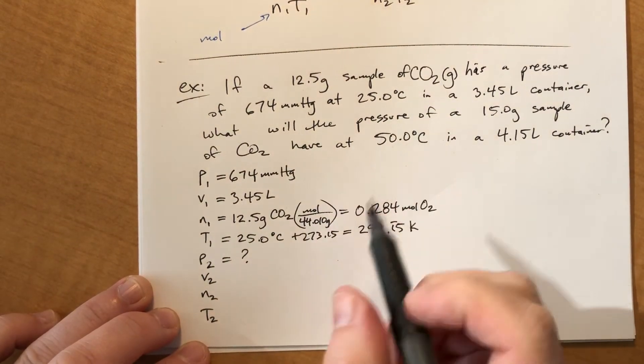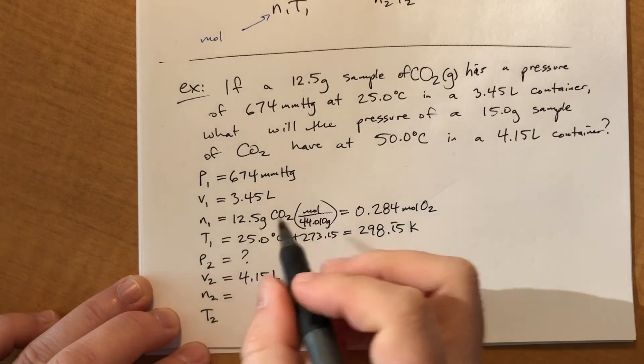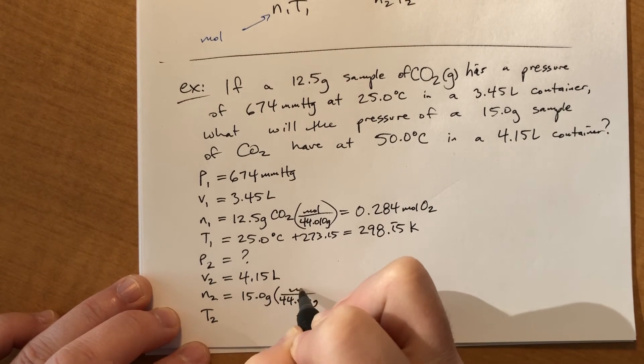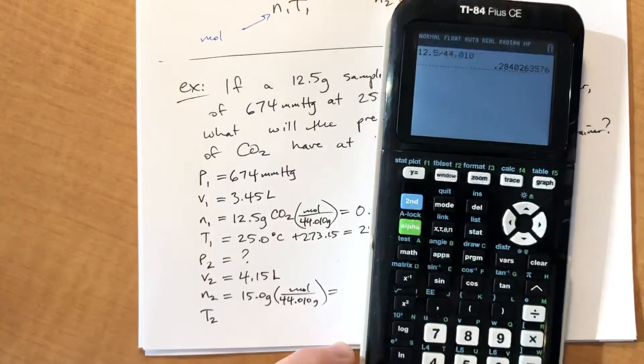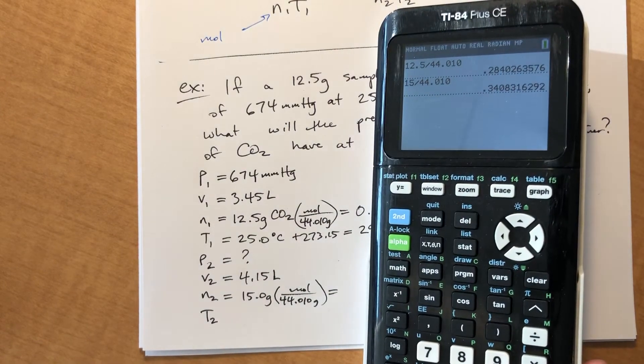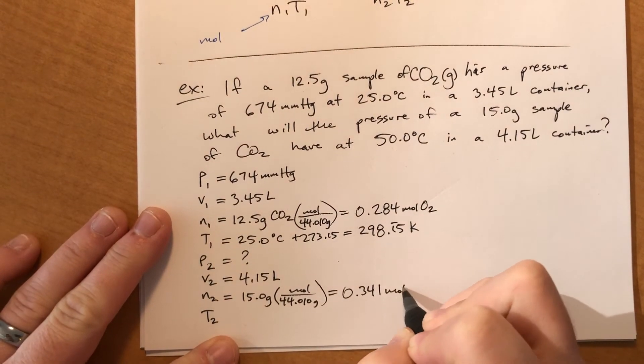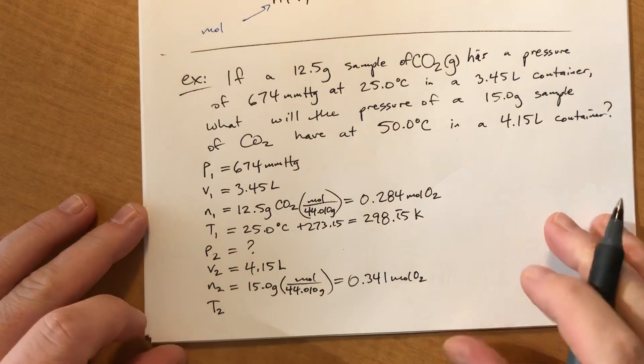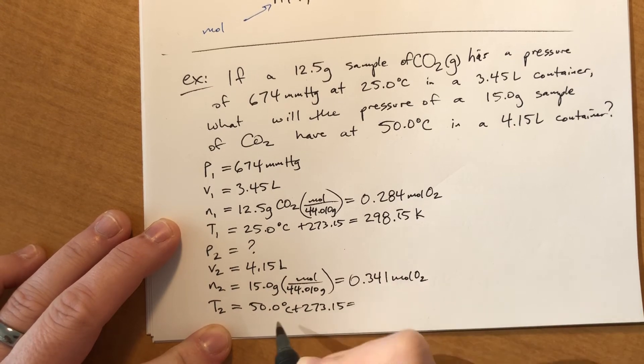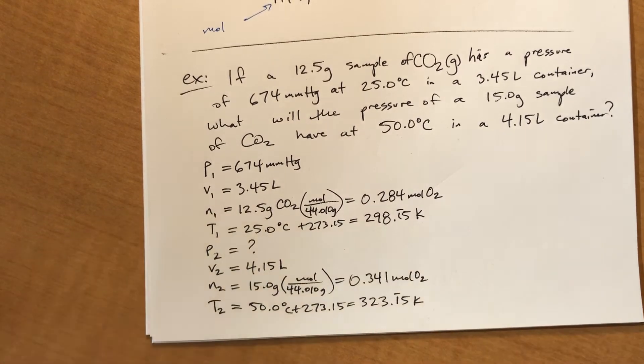P2 is what we're solving for. It says, what's the final pressure? V2 is 4.15. N2, same concept, but we take 15.0 divided by 44.010 grams per mole. We get some sort of number. And I got 0.341. And then T2, we have 50.0 degrees, and we need to add 273.15. So that would be 323.15 Kelvin.